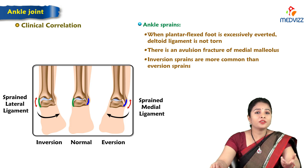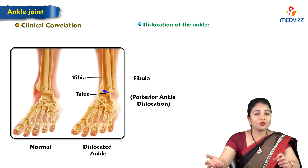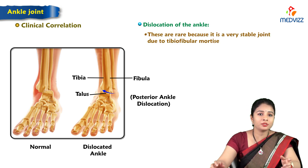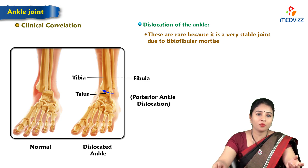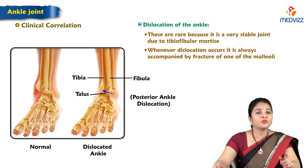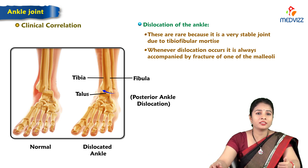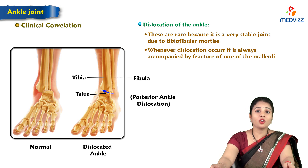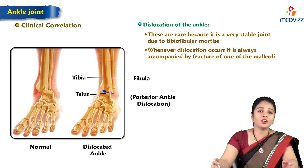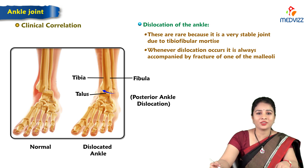Dislocation of the ankle joint is rare because it is a very stable joint due to the tibiofibular mortise. However, when dislocation does occur, it is always accompanied by fracture of one of the malleoli — either medial or lateral — along with the dislocation. This completes the clinical correlations and normal anatomy of the ankle joint.